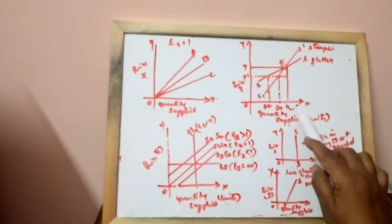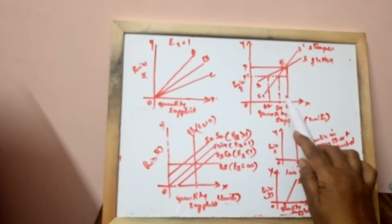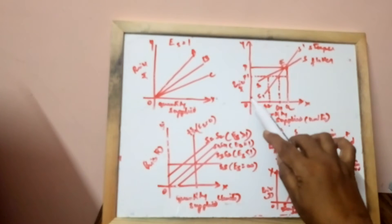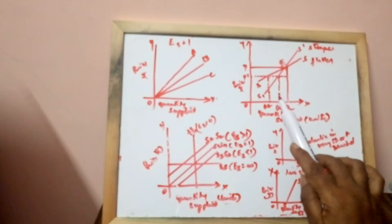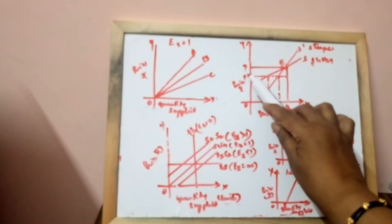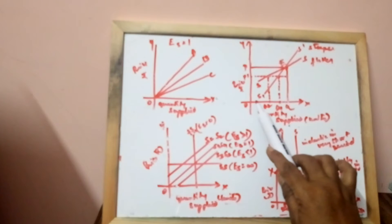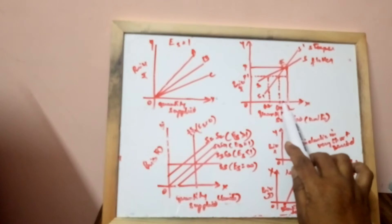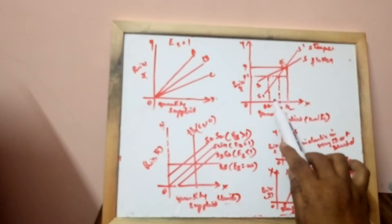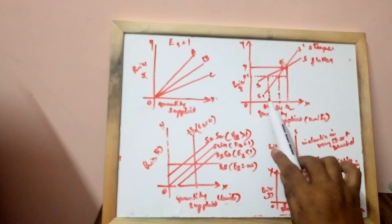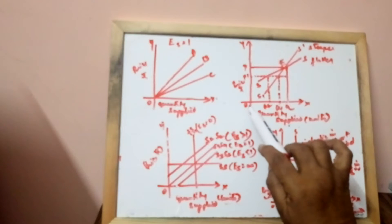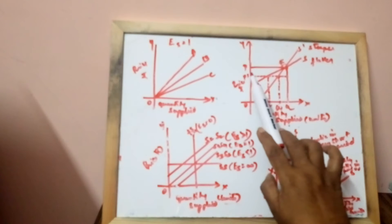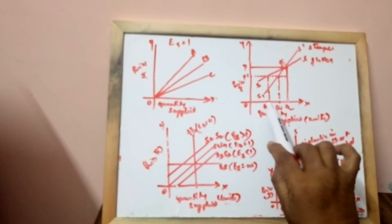At point E, quantity OQ is supplied at price OP. When price falls from OP to OP1, the quantity supplied falls from OQ to OQ1. Here you find OQ1 and OQ2. When price falls from OP to OP1, you find the quantity OQ2.